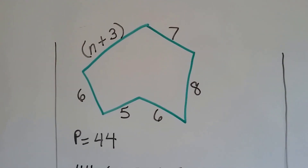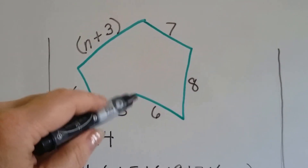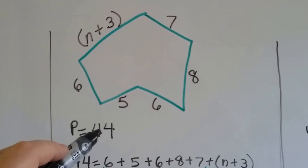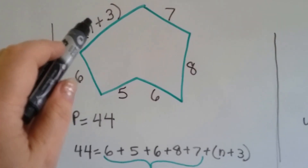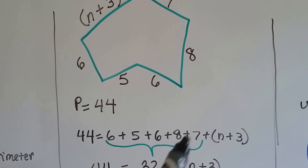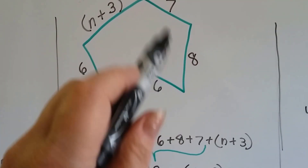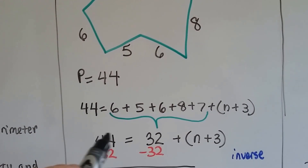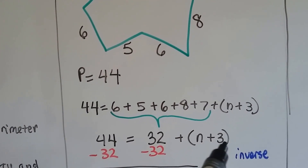For this concave hexagon — yep, that's a hexagon; it's just a concave one because it's punched inward — we know the perimeter is 44. We've got all of these measures, and we've got n plus 3 for one side. So what we do is we total up all the measures we do know: the 6, the 5, the 6, the 8, and the 7. We write our equation: 44 is equal to 32 plus the quantity n plus 3.